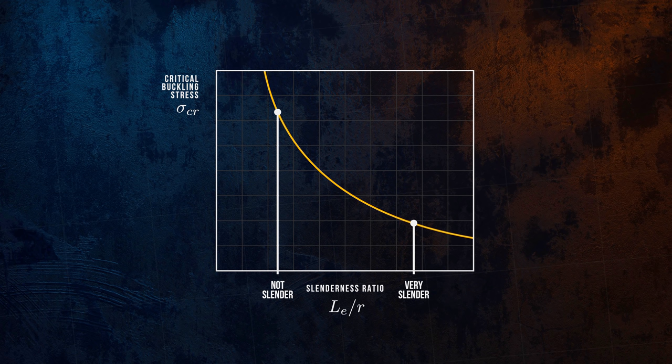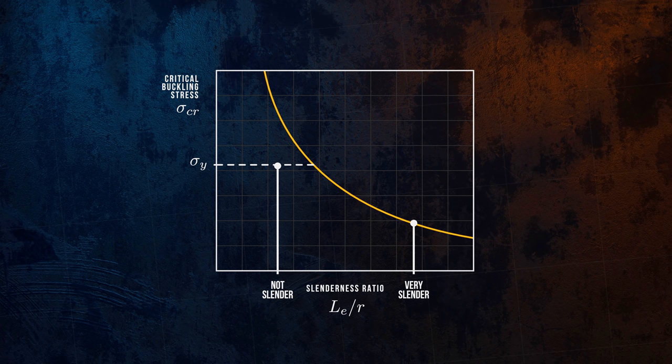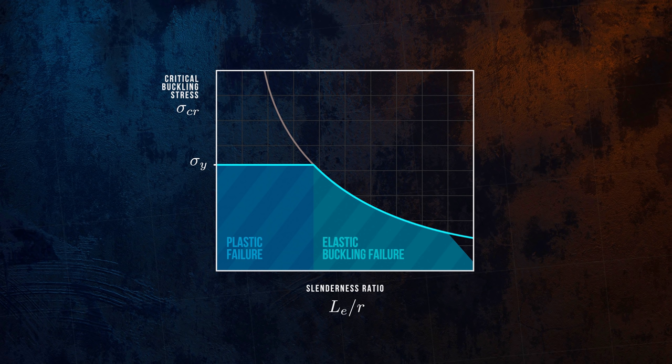If we draw the compressive yield strength of the column material on this graph, we can see that for these slenderness ratios, the strength of the material will be exceeded before the buckling limit is reached. This means we can define two distinct regions, where beams fail by crushing because the stress in the column exceeds the material yield strength, and where they fail due to buckling.